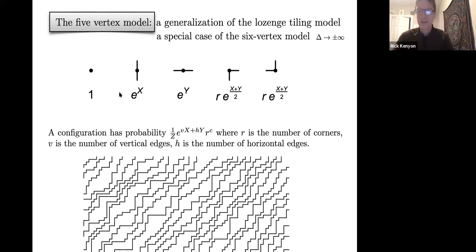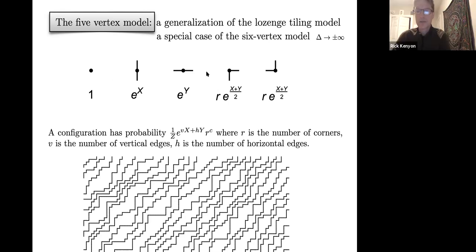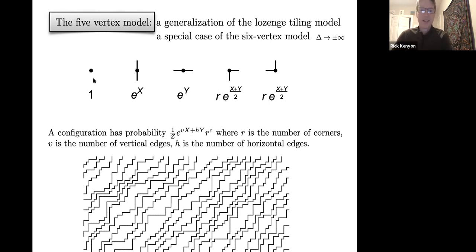How is it different from the six vertex model? We're not allowing the case where paths bounce off each other. We consider the full model with five different weights, but two of them look the same. Every left turn must eventually be followed by a right turn, so the number of left and right turns pair up. You can replace those two weights with their geometric mean—that removes one degree of freedom, and after scaling you're left with three degrees of freedom: r, x, and y.